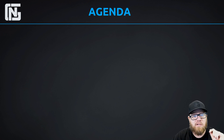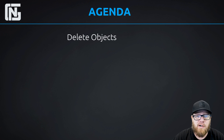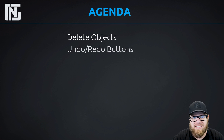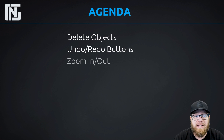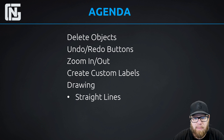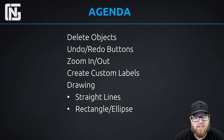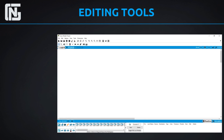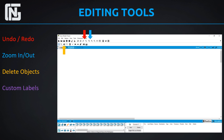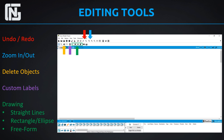So let's jump into this and start talking about the tools we're going to cover in this lesson, starting with how to delete objects, the undo and redo feature, zooming in and out, creating custom labels, and then the drawing palette — how to draw straight lines, rectangles, and freeform drawing. To find these tools we can go to the menu bar at the top. The undo and redo buttons are in the first row, next to that we can find our zoom in and out buttons, and in the second row we'll find our delete objects button, custom labels button, and our drawing palette.